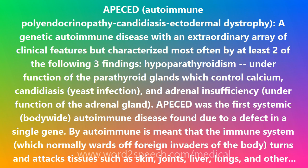APESD was the first systemic, body-wide autoimmune disease found to be caused by a defect in a single gene. By autoimmune is meant that the immune system, which normally wards off foreign invaders of the body, turns and attacks tissues such as skin, joints, liver, lungs, and other organs of the body.